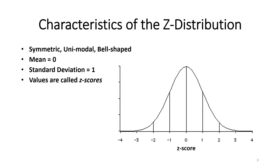When we look at the Z distribution, we are no longer talking about the units of the original variable — whether those units were points on an exam, number of prior arrests, or somebody's age in years. Those units have been removed; what we have are standardized values, or Z scores. The Z distribution looks symmetric, unimodal, and bell-shaped, just like any other normal curve, but it has been standardized. That means the mean of the Z distribution is always going to be zero, and the standard deviation of the Z distribution will always be one.